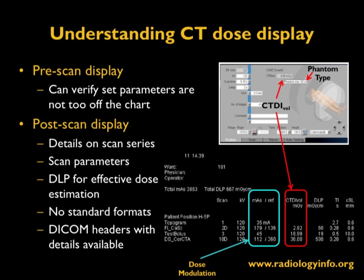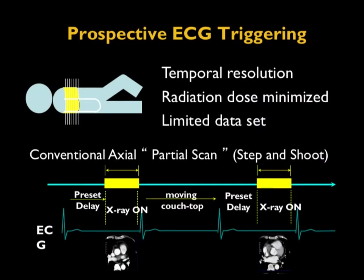On almost all scanners today, information is available regarding radiation dose. After the scan is done, a post-scan dose report is displayed. Shown here is a dose report from a particular vendor, showing each CT series along with the type of tube voltage selected and the radiation output. The second type of cardiac CT acquisition is prospective ECG triggering.